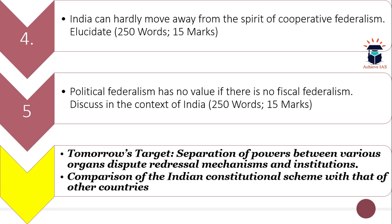We are not picking questions randomly — we follow a detailed 99-day timetable, a 99-day super plan, in which you are given a daily target and the static questions are asked based on that daily target. Today's questions were based on today's target. Tomorrow's static questions will be from the topics of separation of powers and comparison of the Indian constitutional scheme.